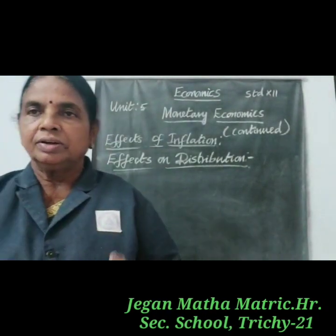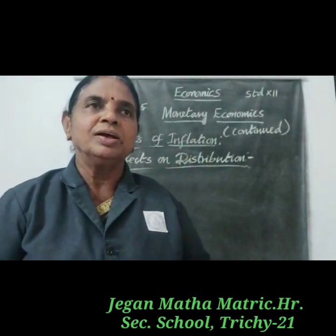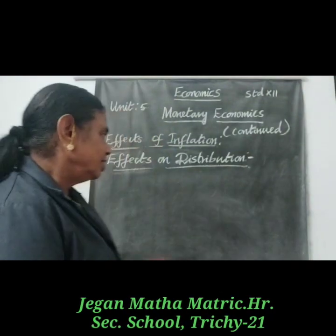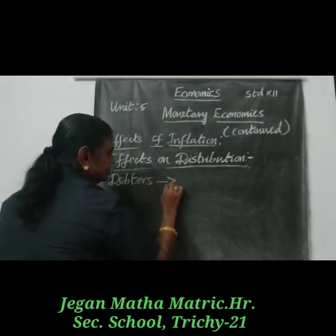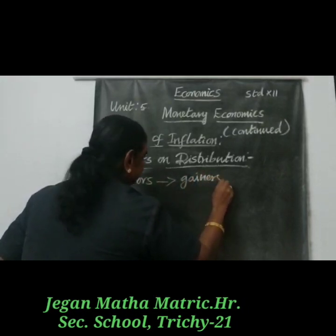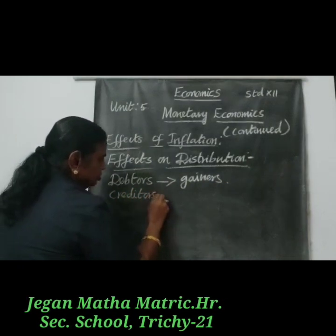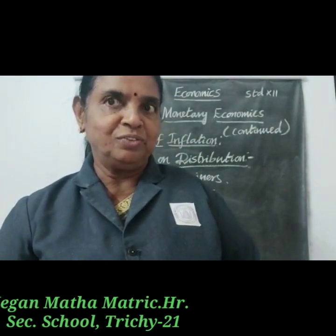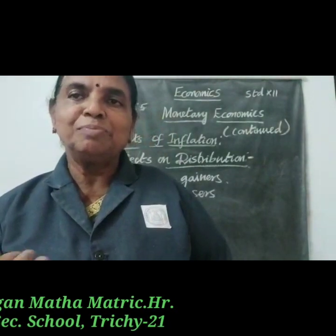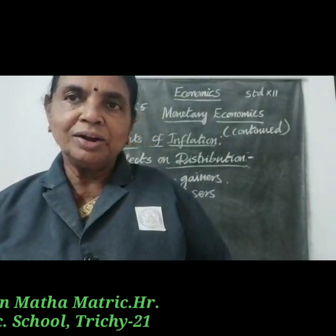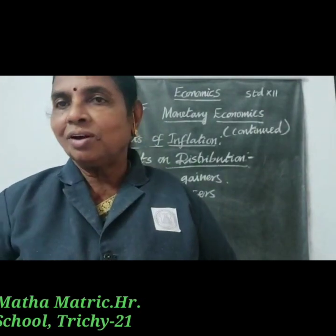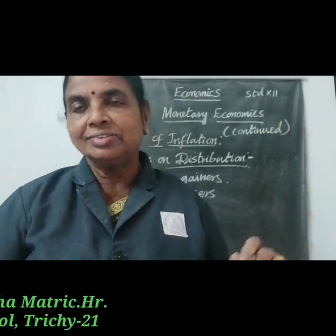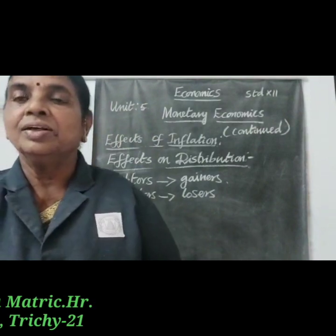Inflation effects on the distribution side — we have four important points. The first is debtors and creditors. Debtors are gainers. When they borrowed money, the purchasing power of money was higher, but when they repay the loan, the purchasing power of money is low due to rising prices. So debtors gain and creditors lose.